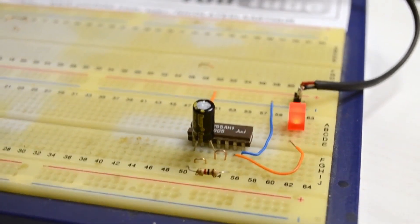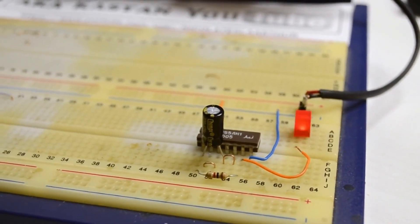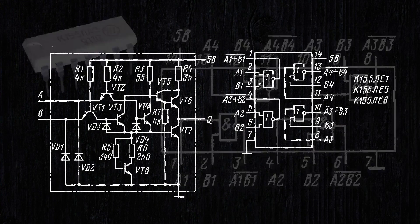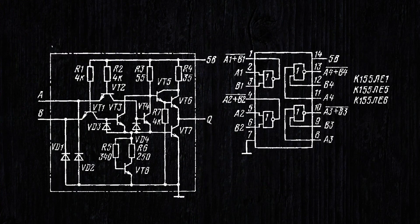So, if you don't have an LN1 microchip, but you have an LE3 or LE1 microchip, by simply shorting the inputs, you get a NOT element.